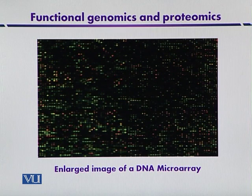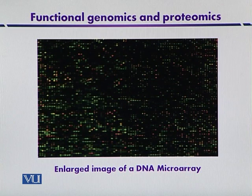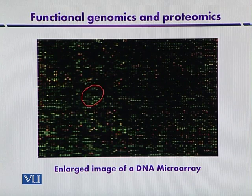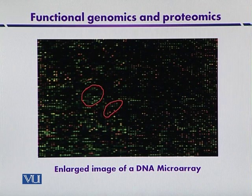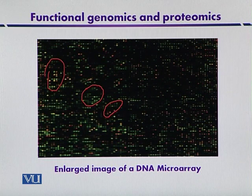This diagram indicates the expression of 6,200 genes from yeast exposed to different culture conditions. Green spots represent genes expressed under normal culture conditions, while red spots represent genes expressed at later stages of sporulation. Yellow spots belong to genes expressed constantly at both the normal cellular stage and the sporulation stage, allowing us to detect which genes are active in the normal cell cycle versus at later sporulation stages.